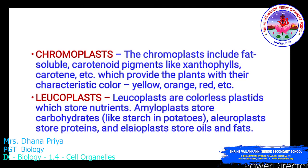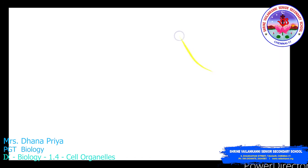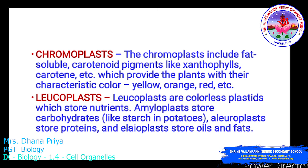Chromoplasts are colored plastids containing fat-soluble carotenoid pigments like xanthophyll and carotene. They provide plants with characteristic colors like yellow, orange, and red — for example, the red color of tomatoes is due to chromoplast. Leucoplasts are colorless plastids that store nutrients. Examples include amyloplasts, which store carbohydrates like starch in potatoes; leucoplasts that store proteins; and elaioplasts that store oils and fats.